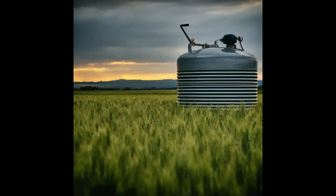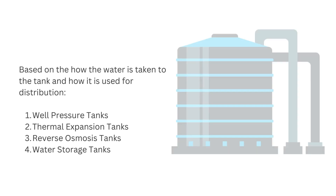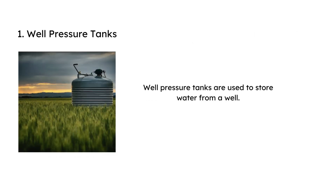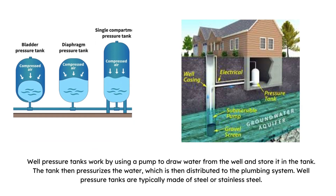Based on how water enters and exits the tank, we can categorize them into distinct types. First: well pressure tanks. Well pressure tanks are used to store water from a well, typically used in homes or businesses that have their own wells for water supply. They work by using a pump to draw water from the well and store it in the tank, which then pressurizes the water for distribution to the plumbing system. Well pressure tanks are typically made of steel or stainless steel.